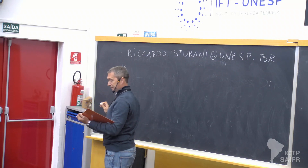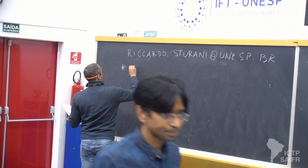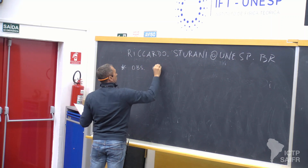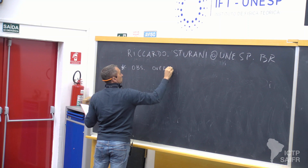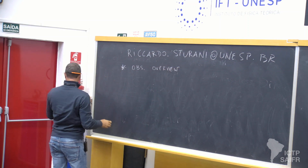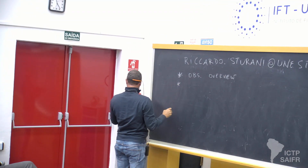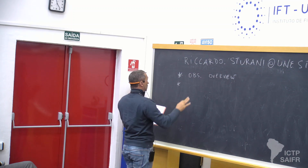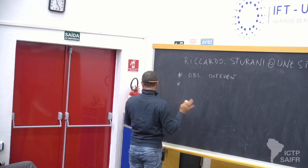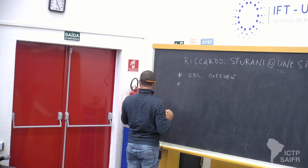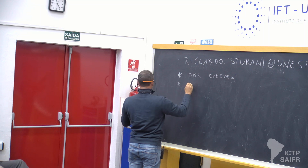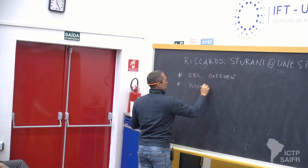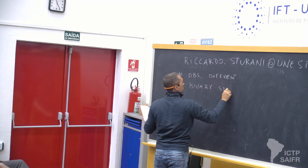Let me give a very basic summary. I will give some observational overview first, very quickly. This is the summary of the whole course, not just today. The observational overview will probably take most of today. And then I will try to describe the binary system dynamics.